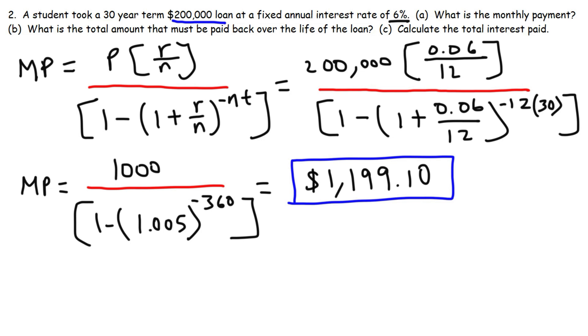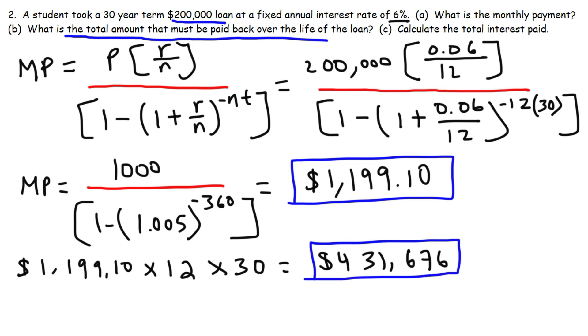Now let's move on to Part B. So what is the total amount that must be paid back over the life of the loan? So it's very similar to the last question. We're going to take the monthly payment, multiply it by 12 months per year, and this student is going to be paying this for 30 years. So $1,199.10 times 12 times 30. This is going to be $431,676. So that's how much they're going to pay in the course of 30 years.